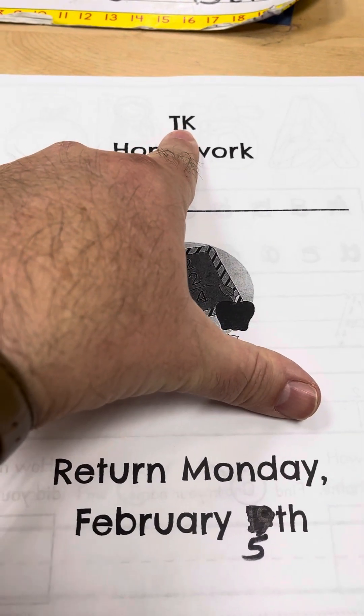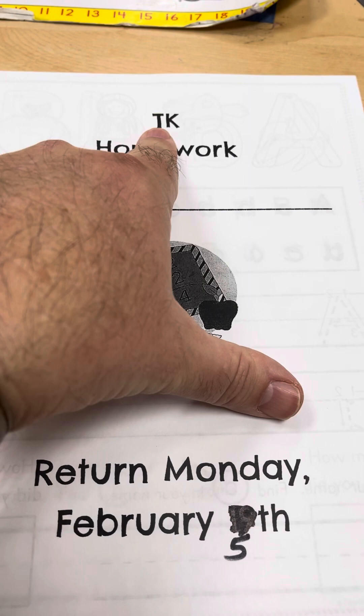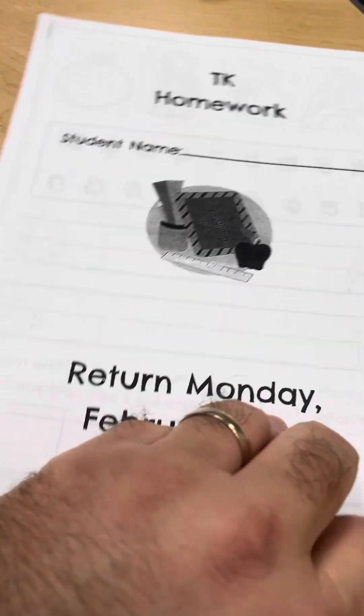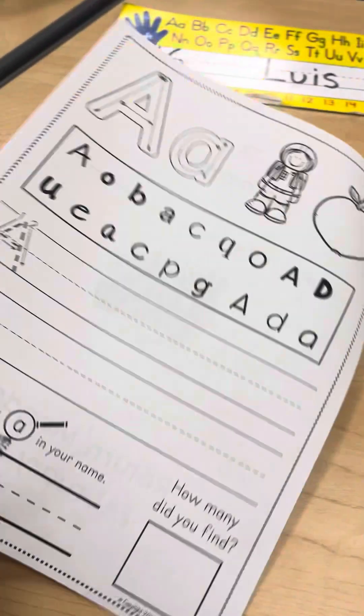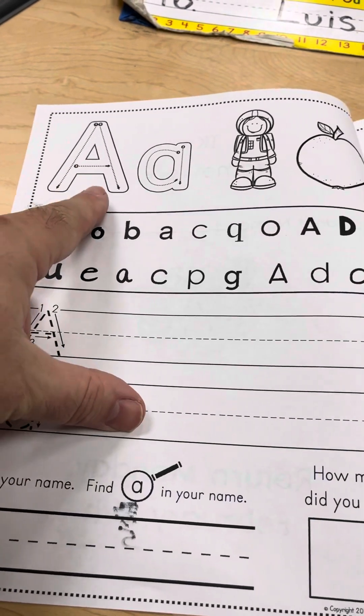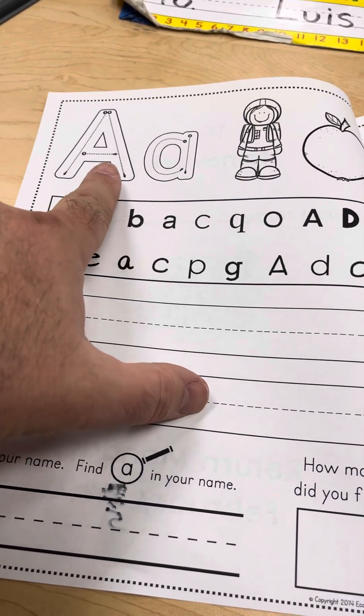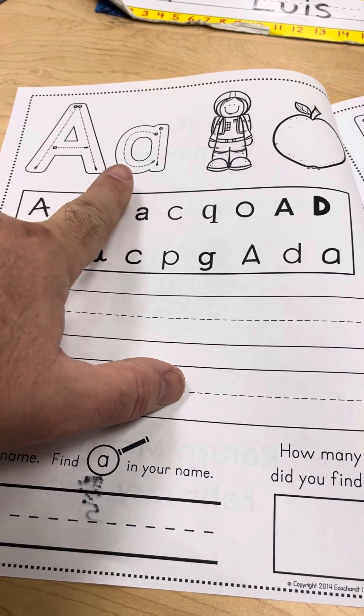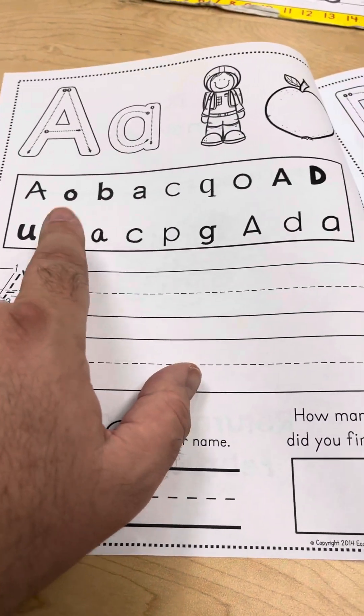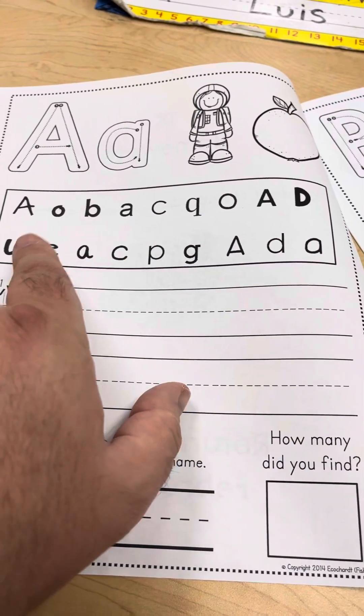This is the TK homework. So if your student is a TK student, their homework packet looks like this. They're going to practice writing some letters, like in this case, this is the A. They're going to practice writing an uppercase and a lowercase A. They're going to circle everything here that's an A.